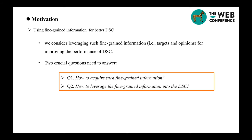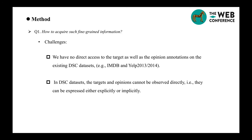For the first question, how to acquire such fine-grained information, we first need to handle two challenges. The first one is we have no direct access to the targets as well as the opinion annotations on the existing datasets. Also, in the datasets, the targets and the opinions cannot be observed directly; they can be expressed either explicitly or implicitly.